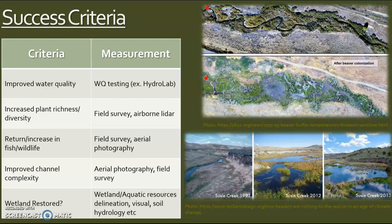Also, we're looking for improved channel complexity, which is usually one of the easiest things to find out through aerial photography and a general field survey — it's a very visual thing you can see. And overall, success would be measured by whether the wetland is restored: did you see this area that was just a stream with dry riverbeds, and is it now a wetland area? An easy way to measure that would be to do a wetland or aquatic resources delineation, check visuals, take pictures, and maybe test the soil hydrology. If you see the changes over the years in before-and-after photos of beaver introduction, that's what you're looking for to see if it's successful.